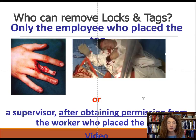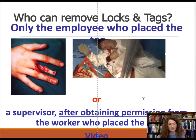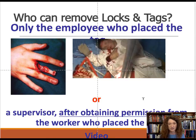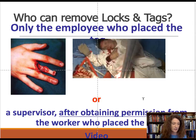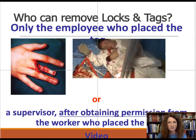Only the employee who placed the lock and tag can remove it, or a supervisor after obtaining permission from that employee — though this practice is not preferred in occupational safety and health. It's much better for the worker to remove it themselves and keep the lock with them. You may see maintenance workers walking around with locks on their belts — those are their personal locks that they carry with them.